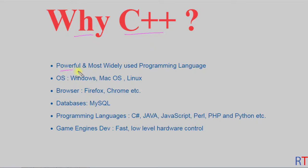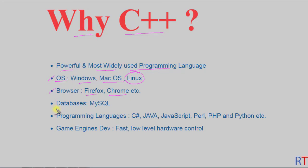C++ is a very powerful and widely used programming language. Because it is so powerful, it has been used in developing operating systems like Windows, Mac OS, and Linux. C++ has also been used in developing browsers like Firefox and Chrome, and databases like MySQL.